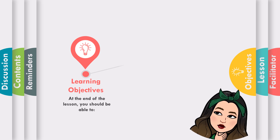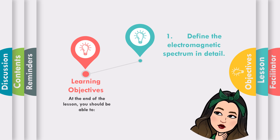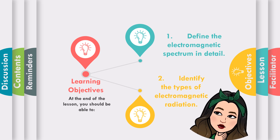At the end of the lesson, you should be able to define the electromagnetic spectrum in detail and identify the types of electromagnetic radiation.